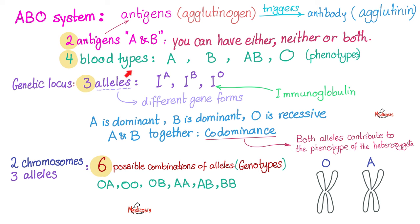Genetically speaking, they are carried on three alleles. A dominates over O, and B dominates over O — I told you, O is nothing, it is zero. But between A and B there is co-dominance — there is a partnership. That's your phenotype.